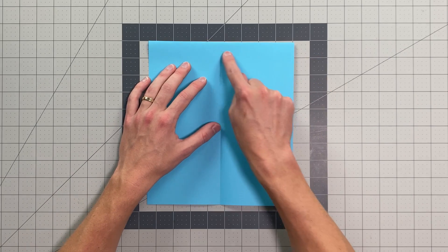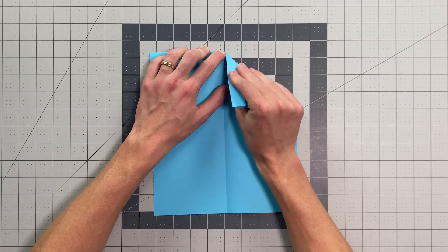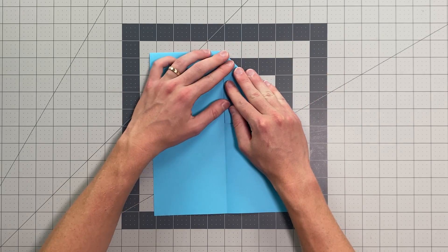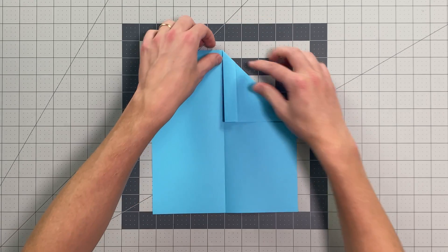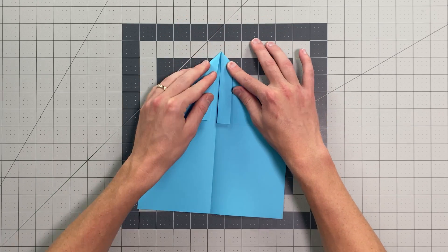At this point you'll want to fold this edge here into the center crease, making a triangle just like this one here. And once you do that, go ahead and do the same thing on the other side.